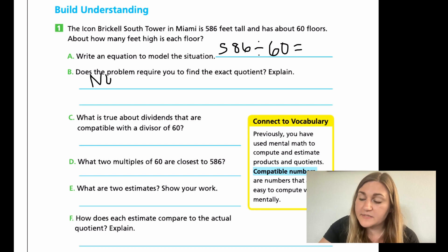Now I'm going to group together D and E. So D, what two multiples of 60 are closest to 586? So multiples of 60, or you can do multiples of 6 and just tag that 0 on in the end. And then E, what are the two estimates show your work? Go ahead and pause here and do those two.